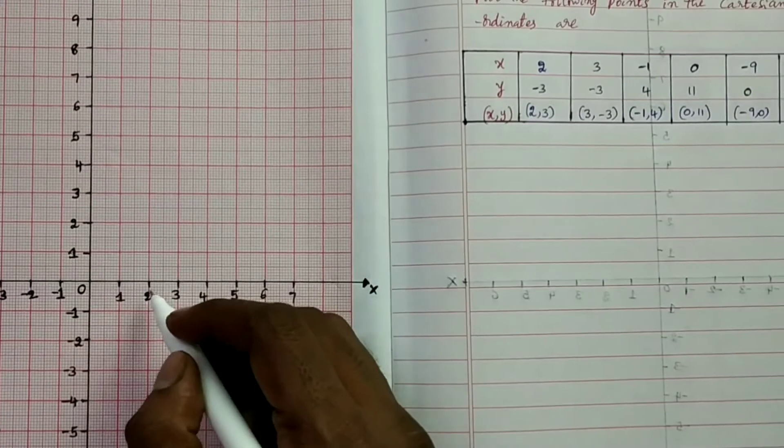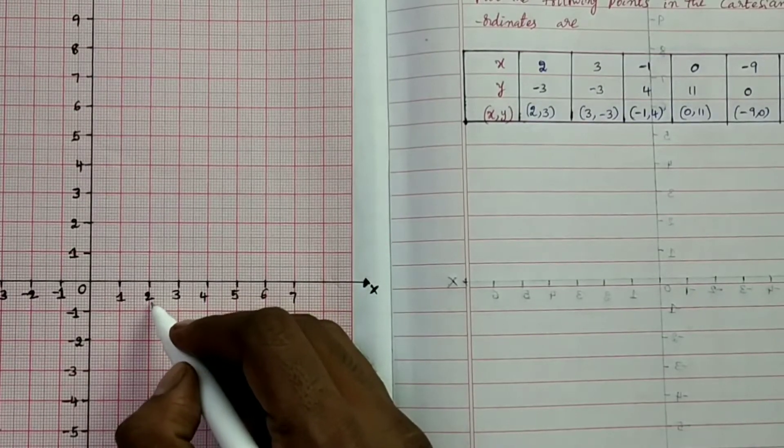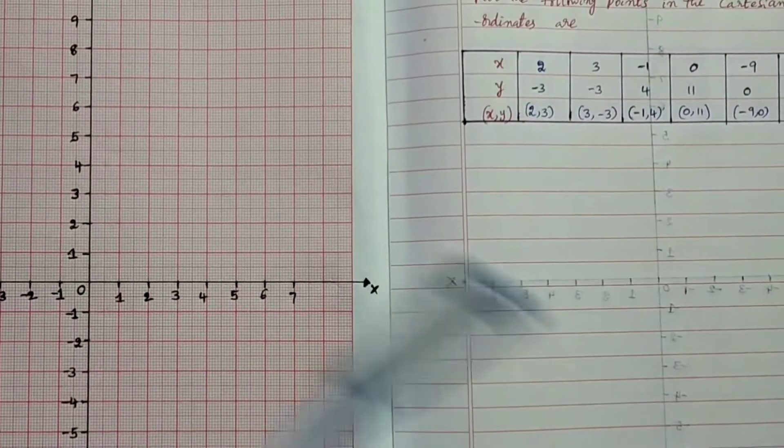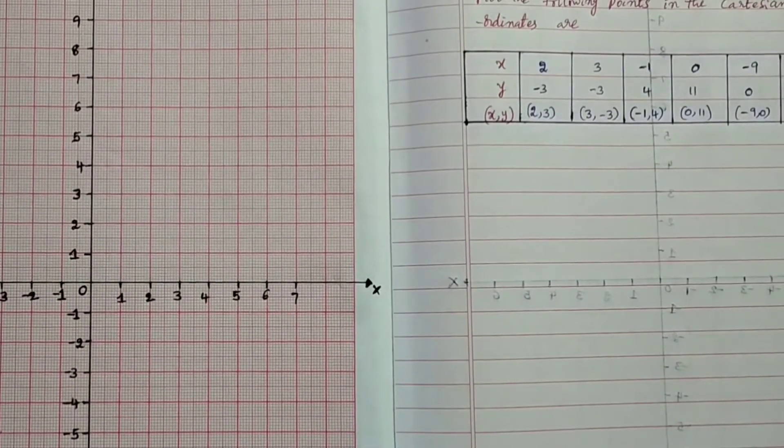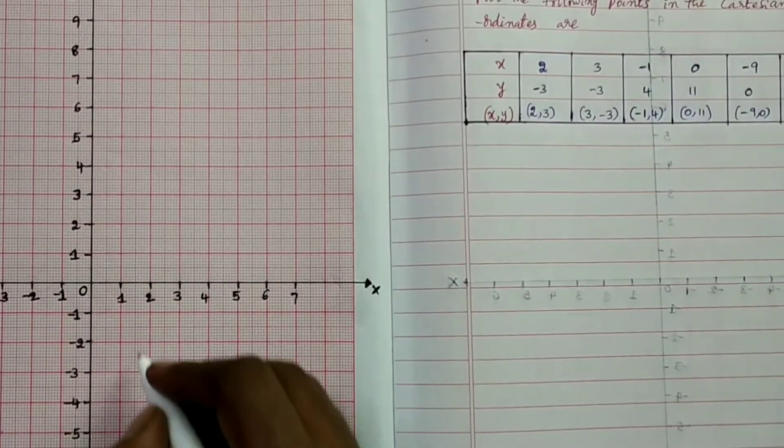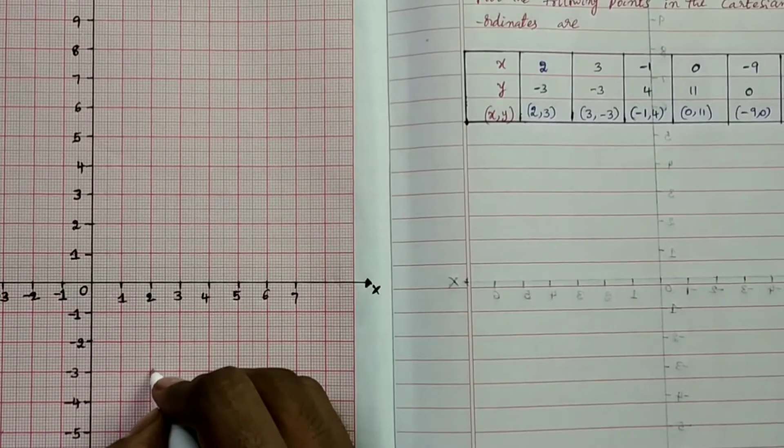So on the x-axis is 2 and y-axis is minus 3. So this point represents (2, -3).